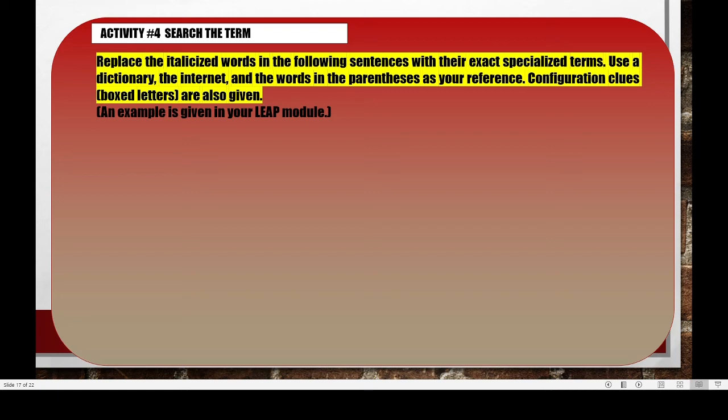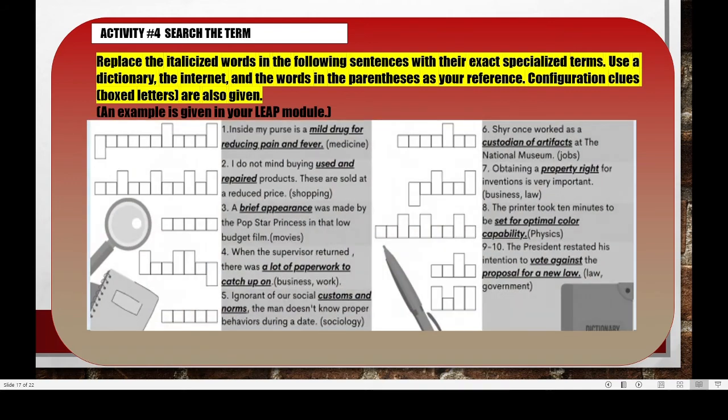In the fourth activity, 'Search the Term', you are going to replace the italicized words in the following sentences with their exact specialized terms. You may use a dictionary, the internet, and the words in the parentheses as your reference. Configuration clues, or the boxed letters, are also given. An example is given in your link module — you just have to check it.